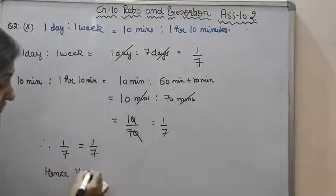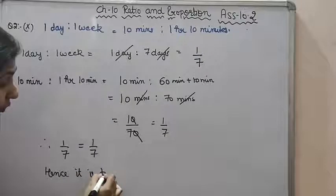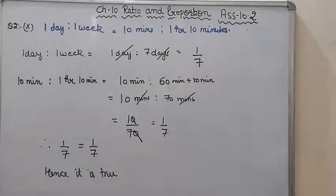So the given statement is true, these two ratios are forming a proportion. If the value of first ratio is not equal to the value of the second ratio, then we can write that it is not equal, and we will write hence it is false. Okay, hope this is clear.